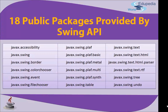javax.swing.undo provides undo functionality. These 18 public packages each provide different functionality. On the other hand, for import purposes, writing import javax.swing.* with a semicolon is enough — this single wildcard statement references all packages at once. If none of these work, you will have to reference them explicitly, for example javax.swing.plaf.basic or similar. Otherwise, javax.swing.* is sufficient.